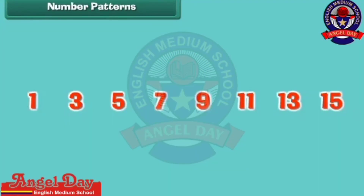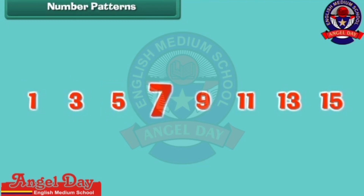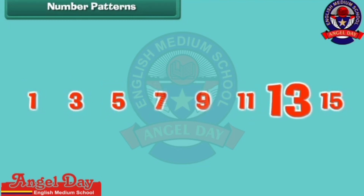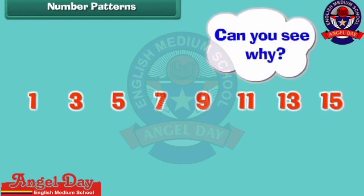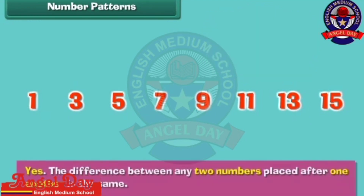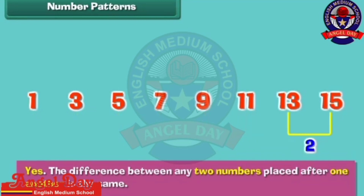Number patterns. There can be patterns in numbers as well. Look at this one: one, three, five, seven, nine, eleven, thirteen, fifteen. The numbers are not the same, still we call it a pattern. Can you see why? Yes — the difference between any two numbers placed after one another is the same.